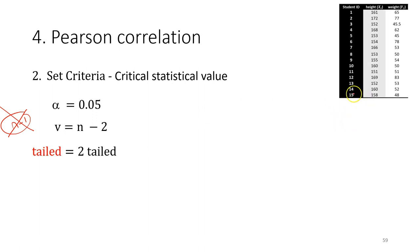In this example, we have 15 students and two variables, so the degree of freedom is 15 minus 2, which equals 13. Pearson correlation test is always a two-tail test — it is always a two-tail test — because we only investigate whether the correlation coefficient is equal to 0 or not equal to 0, meaning whether it is significant or not significant.